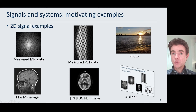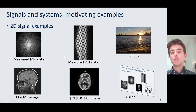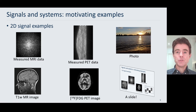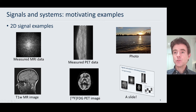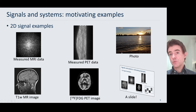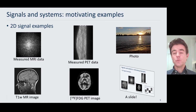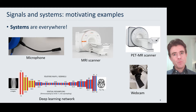Moving back again to positron emission tomography, this is an example of some measured PET data. Again, it's a two-dimensional function, a two-dimensional signal, from which we reconstruct, for example, a slice of a PET image, and so that's showing a cross-section through a brain for when we've injected fluorodeoxyglucose to look at glucose metabolism. But 2D signals, 2D functions, appear all over the place — even a photo taken with my phone here. Again, that's a two-dimensional function where we've got an RGB vector value for each position X and Y that makes up that photograph. Or even this slide that we're looking at right now is an example of a 2D signal, where we've got an X and Y coordinate and some intensity, some grayscale value if it's a black-and-white slide.